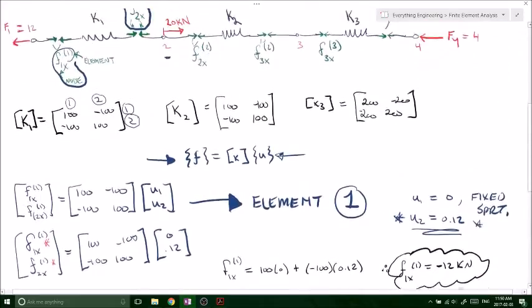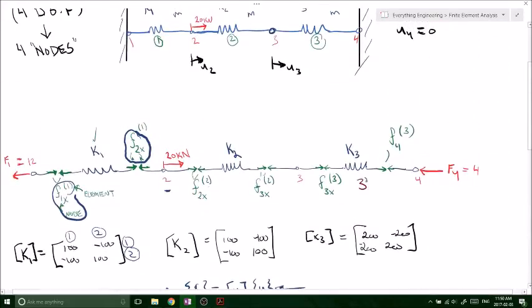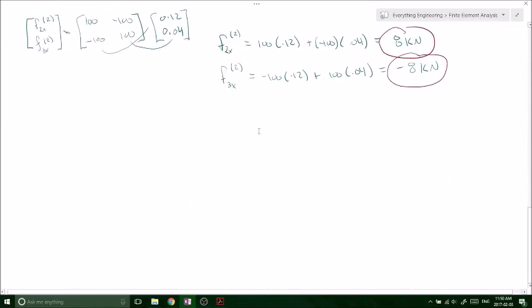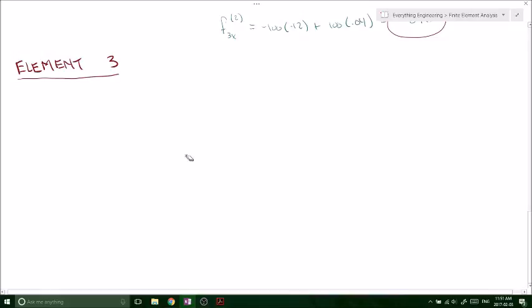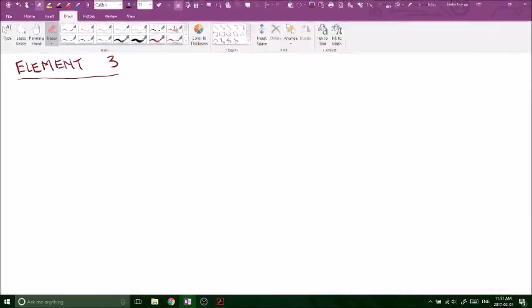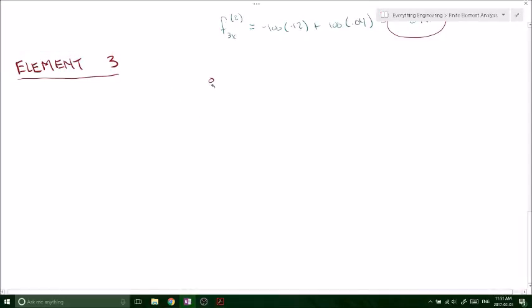And now, finally, we need to deal with our element 3 now. So one more time, stiffness matrix for element 3. We know at element 3, we have our third node connecting our fourth node, right? And we have our k2 is equal to 200. The k is different now.